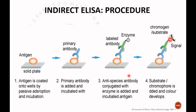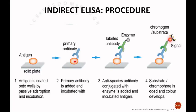In the diagrammatic representation of indirect ELISA: first the antigen is coated on the plate, then the primary antibody is added and incubated, then washed. Next, a secondary antibody conjugated with an enzyme is added, followed by a chromogen substrate. If an antigen-antibody complex is formed, it will produce a color; otherwise, it will not.